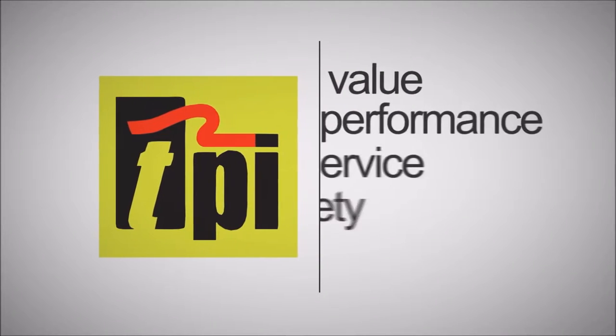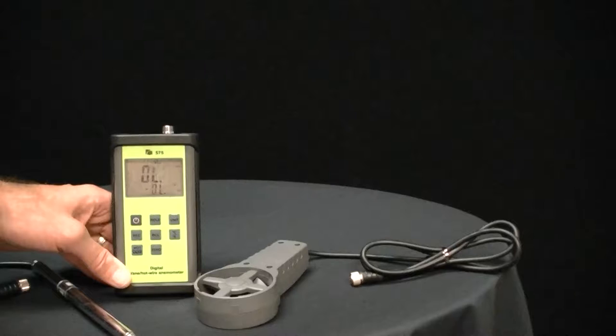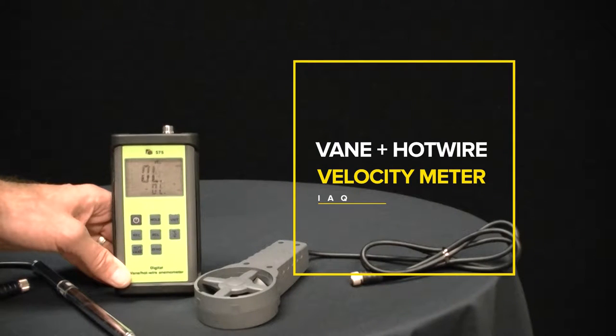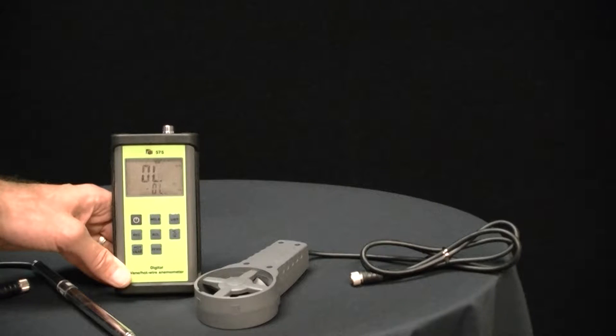Welcome to TPI, the global leader in test products. The product we are highlighting today is the TPI model 575C1 vane and hot wire velocity meter.